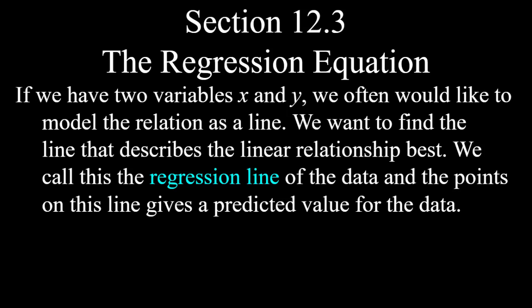Section 12.3 is a longer section. We're going to be talking about the regression equation, which relates to what we discussed in section 12.2 on scatter plots. If we have two variables, x and y, we often want to model the relation as a line. We want to find the line that describes the linear relationship best. We call this the regression line of the data, and the points on this line give a predicted value for that data.